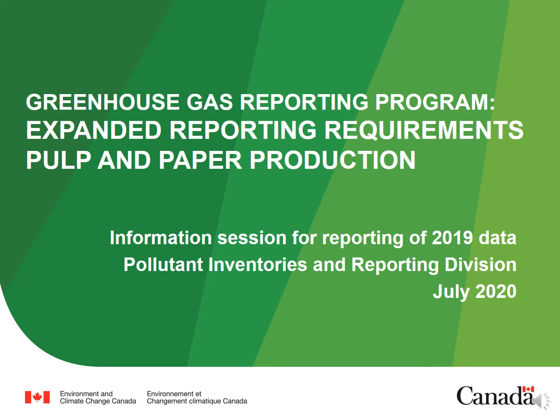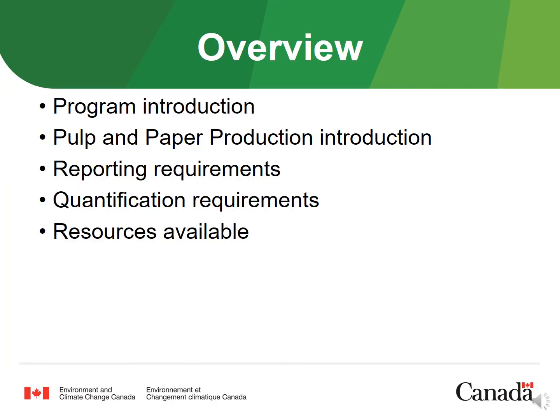Hello and welcome to Environment and Climate Change Canada's information session on the pulp and paper production reporting requirements. These requirements are applicable to those facilities subject to the greenhouse gas reporting program's expanded reporting requirements for 2019, which includes pulp and paper production facilities. We'll begin by introducing the expansion of the GHGRP and the pulp and paper requirements, then explore specific reporting and quantification requirements, and wrap up by describing the resources available to help reporters.